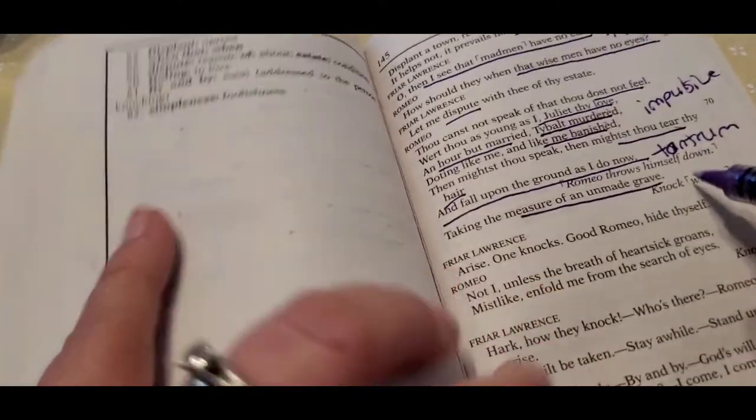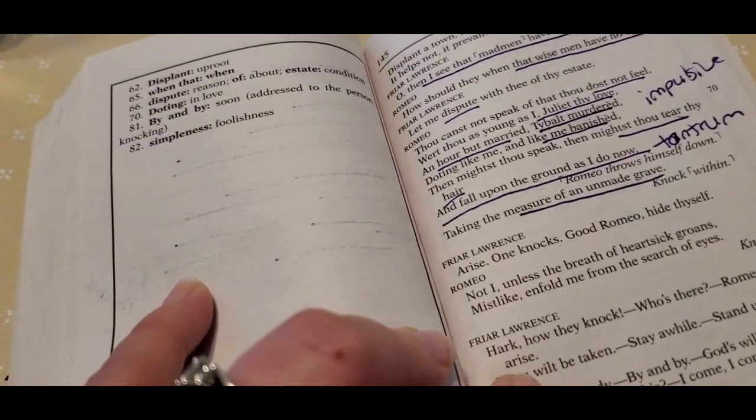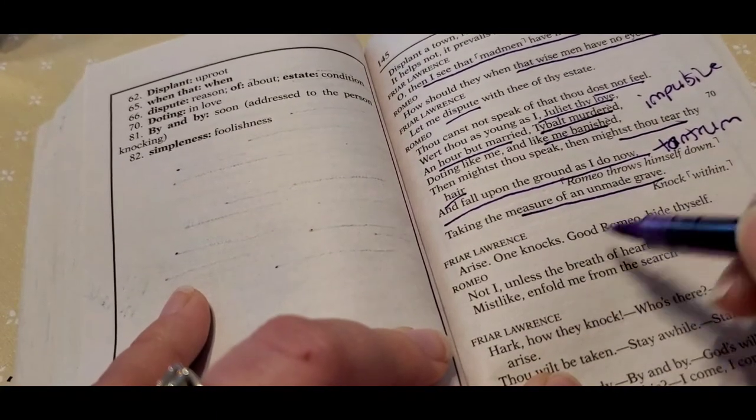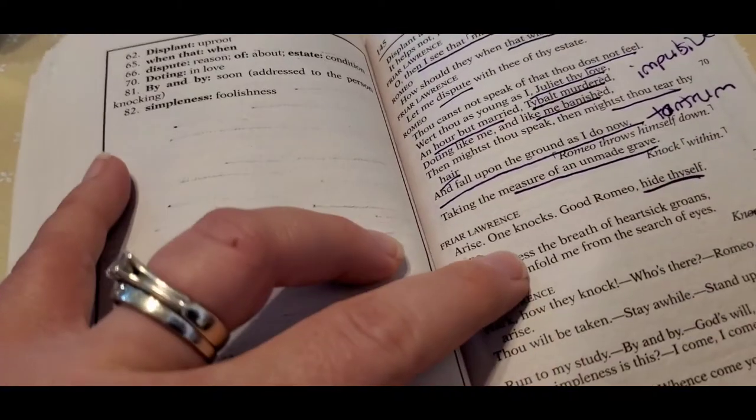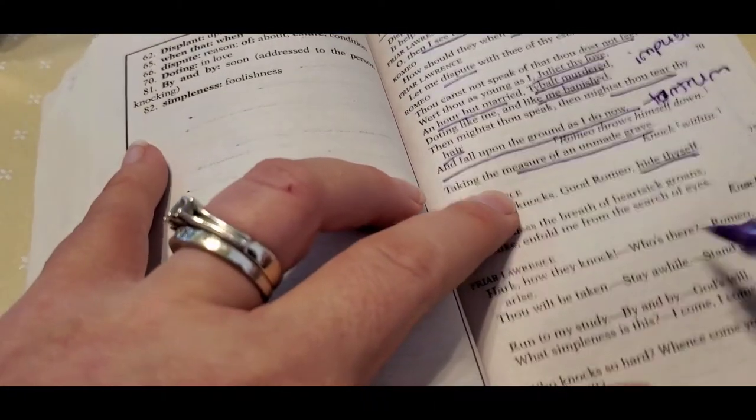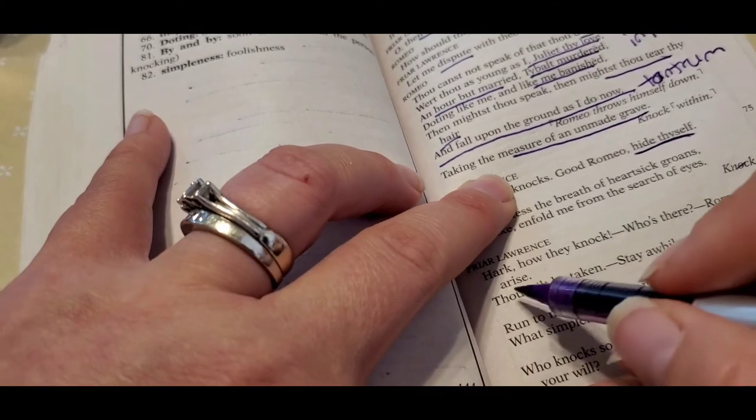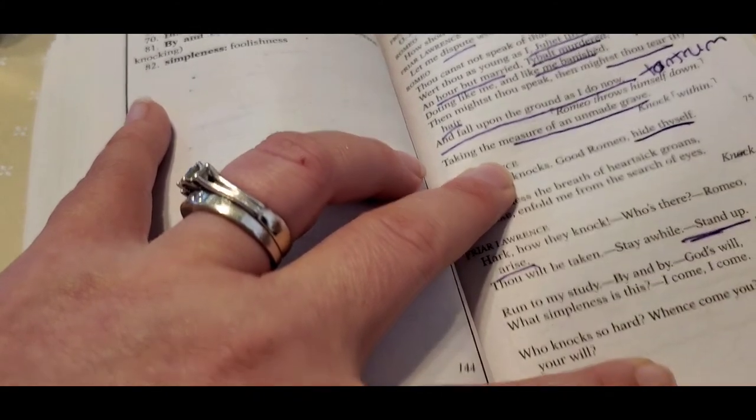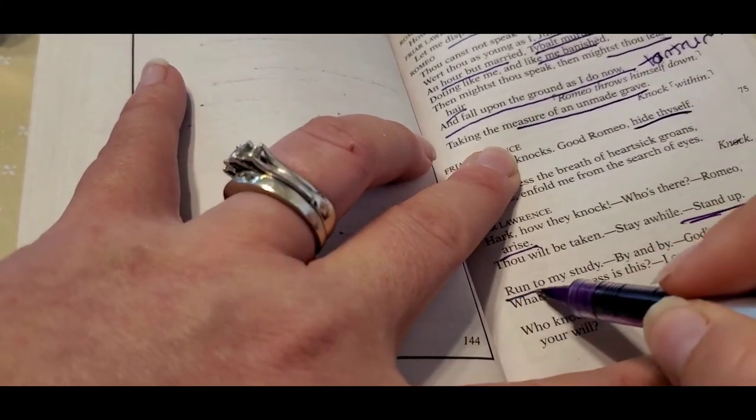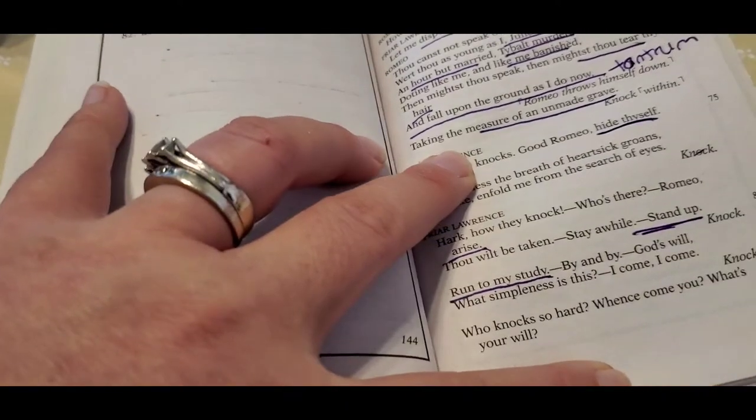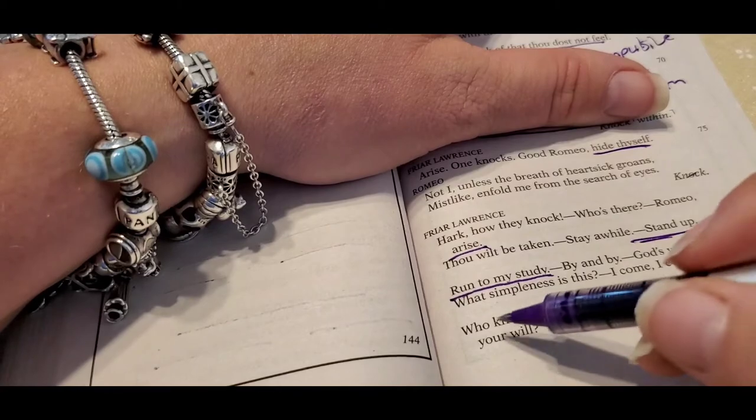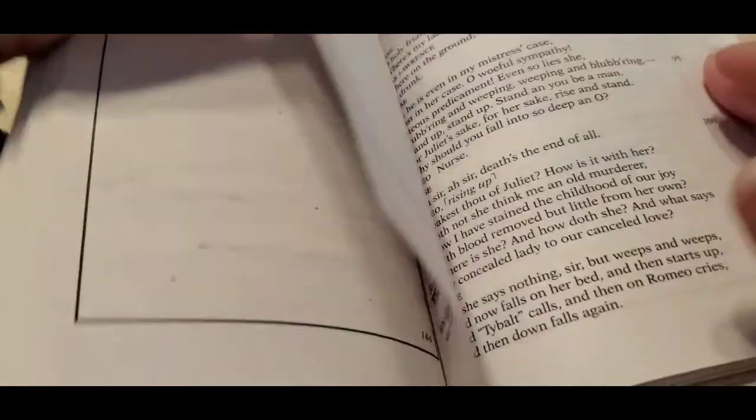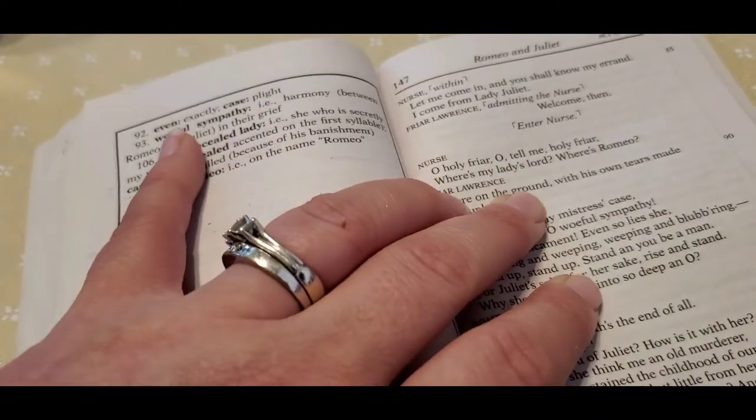And he goes, I'm going to pretend that I'm in the grave. And then you hear a knock. And then somebody's knocking and he goes, you got to hide yourself. And he goes, no. And then the knock again. And he goes, listen, they're knocking Romeo, stand up, get up. Stand up and the knock. And he goes, run to my study. Cause remember, Friar Lawrence can get in serious trouble for having him there. And then he's like, who is knocking so hard? What's your will?